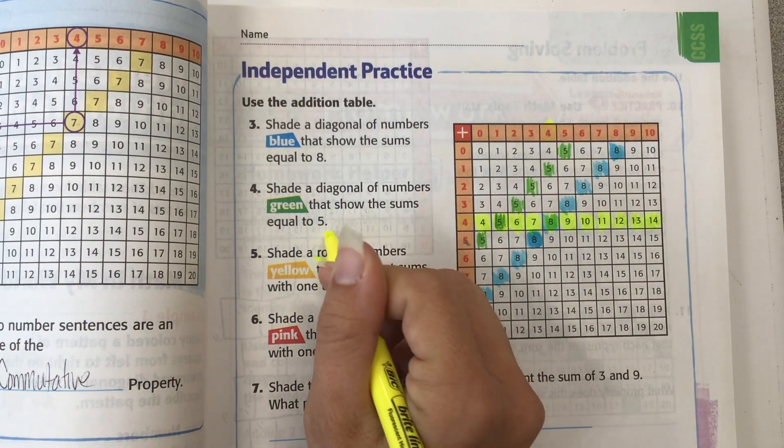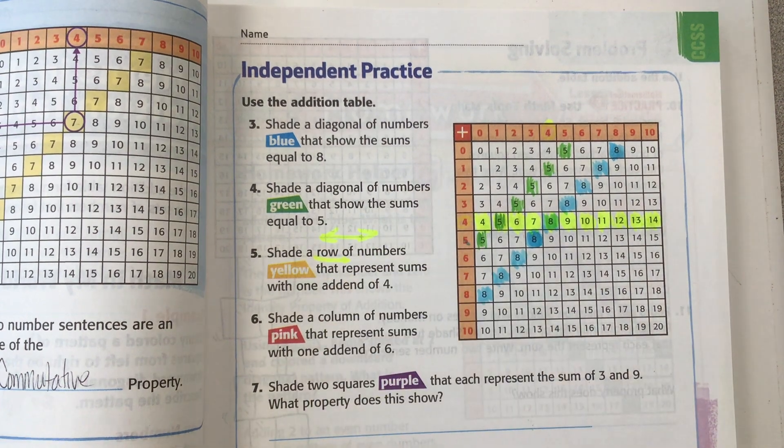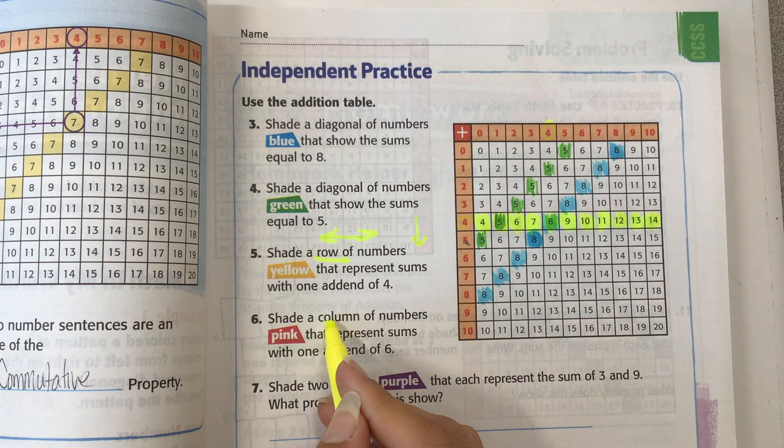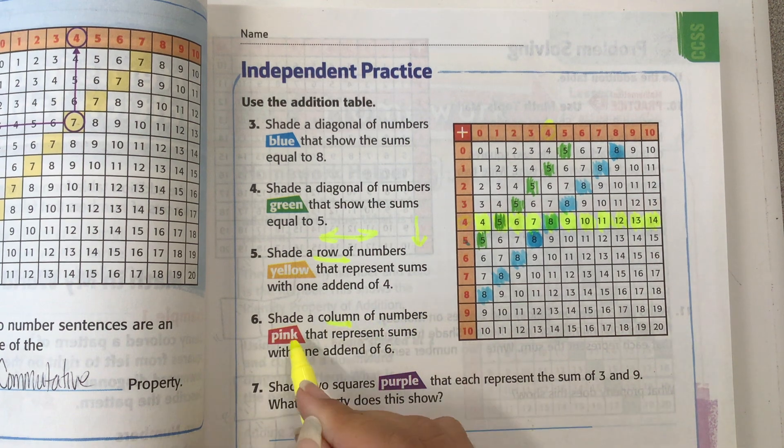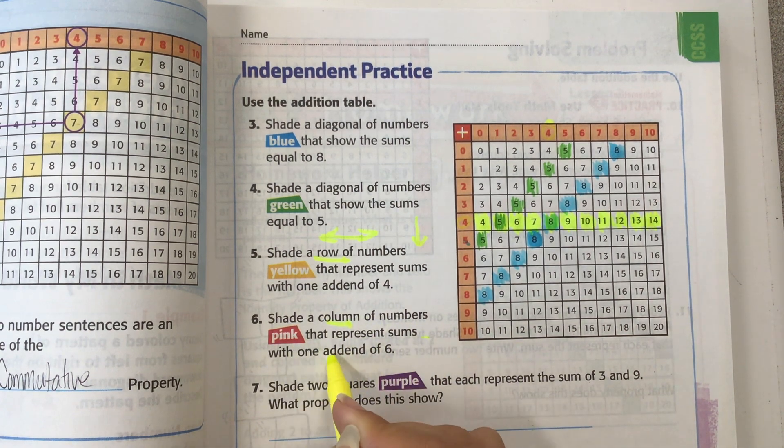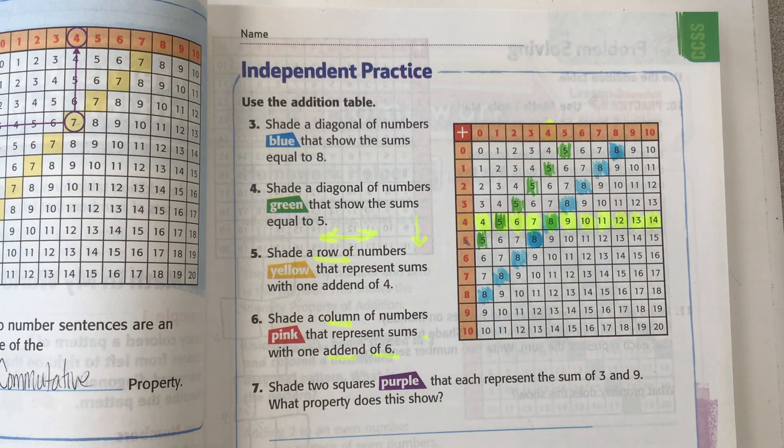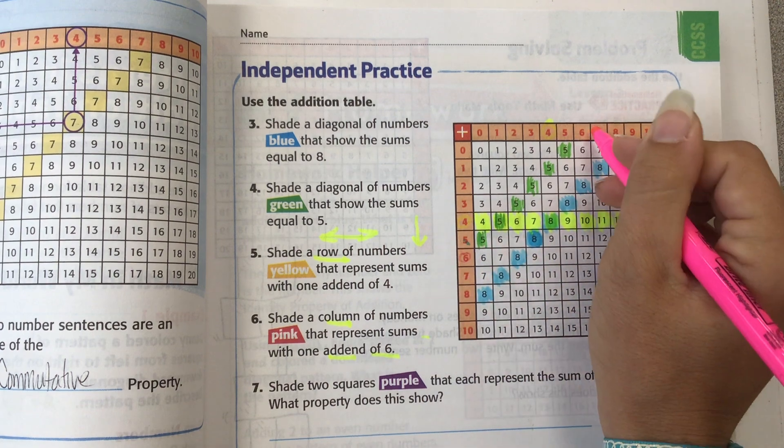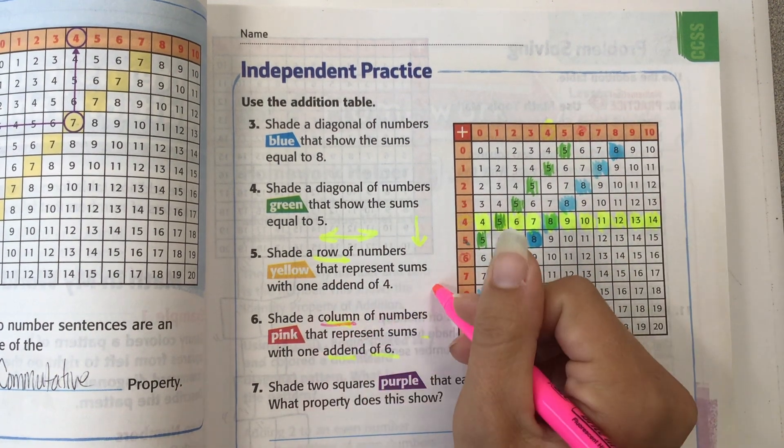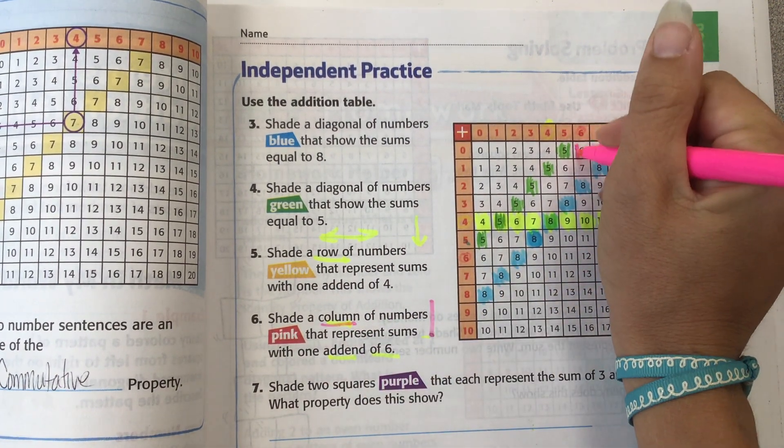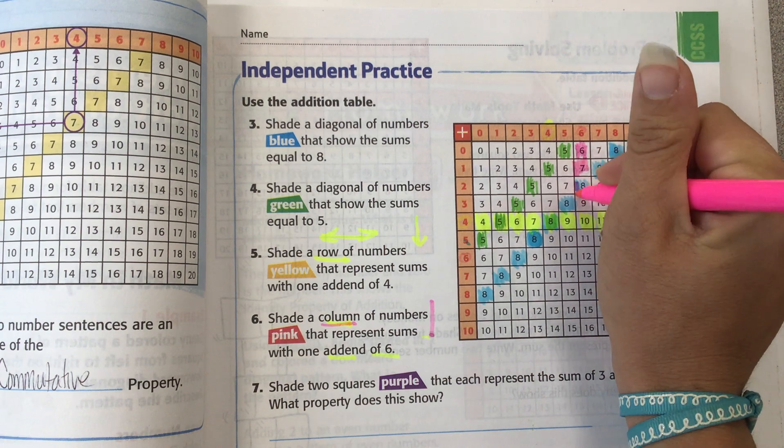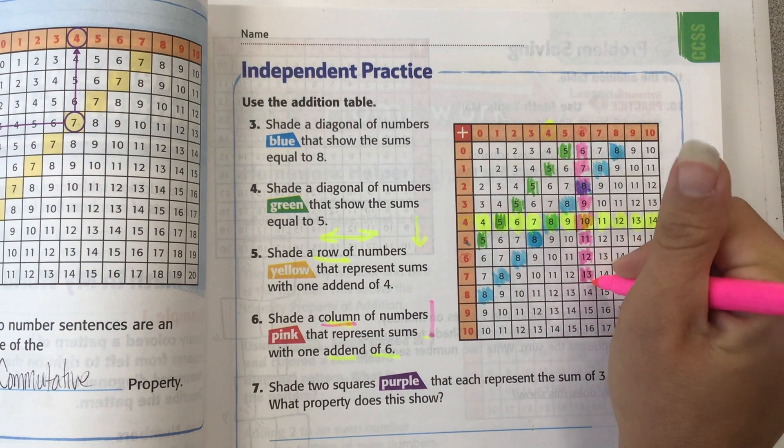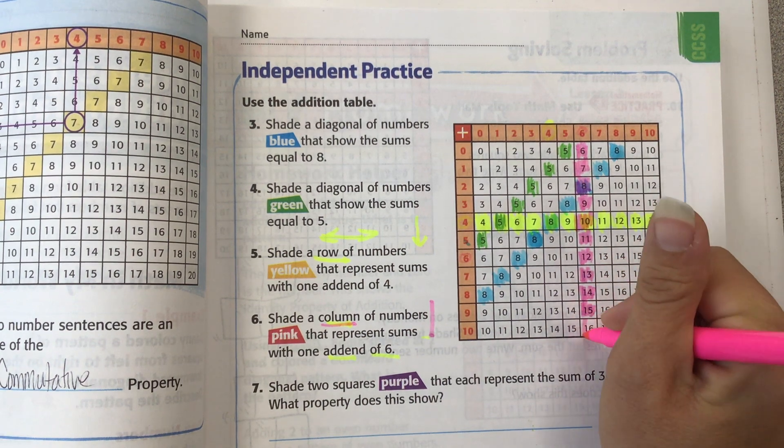And it says to shade a row, and rows go this way. Columns go this way. So number six, shade a column of numbers pink that represents sums with one addend of six. So now I'm going to take my pink, and if one of the addends is six, we could either use this one or this one. But it says column. Columns go up and down, so this is a column of six. And some of these numbers are getting shaded twice. These are all numbers with an addend of six.